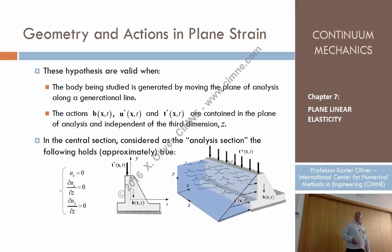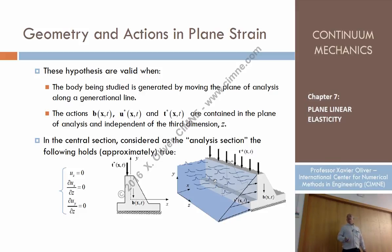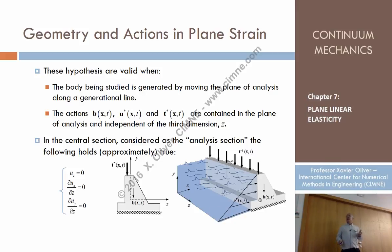If the displacements are like that — in what type of structures can we assume this situation with a reasonable degree of accuracy? Typically, dams. For instance, gravity dams or arch dams with a small curvature angle. Imagine a gravity dam: that's the cross-section, and the geometry of the gravity dam can be represented by translating this cross-section along the third direction, the Z direction. The typical actions on this cross-section are the self-weight, which is contained in the plane of the analysis.